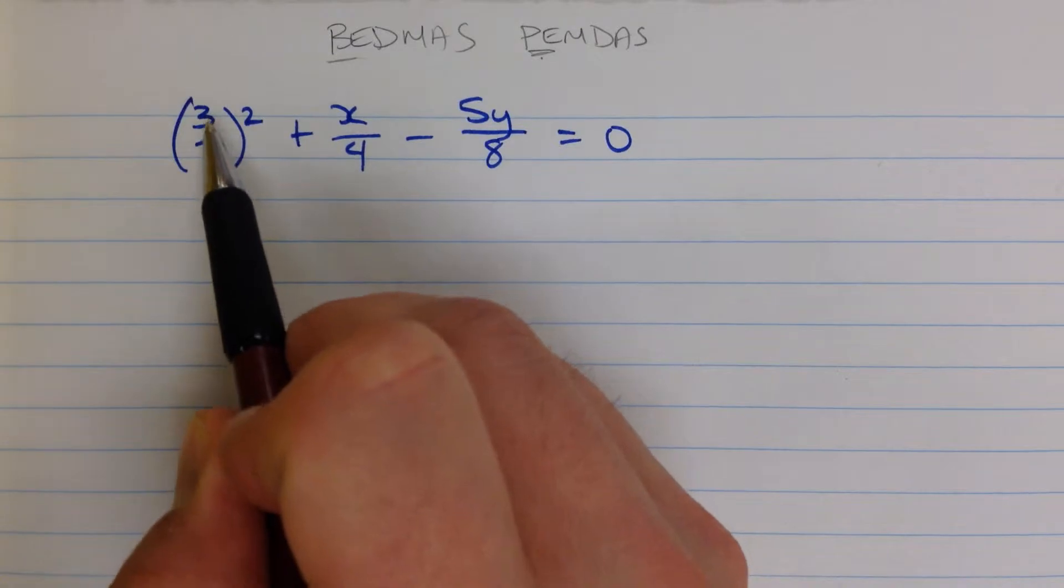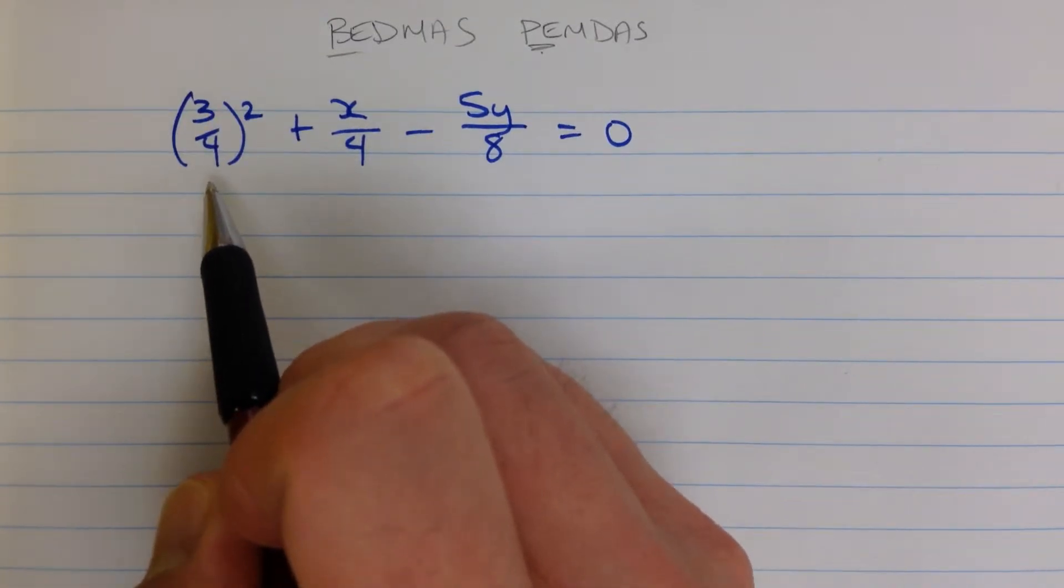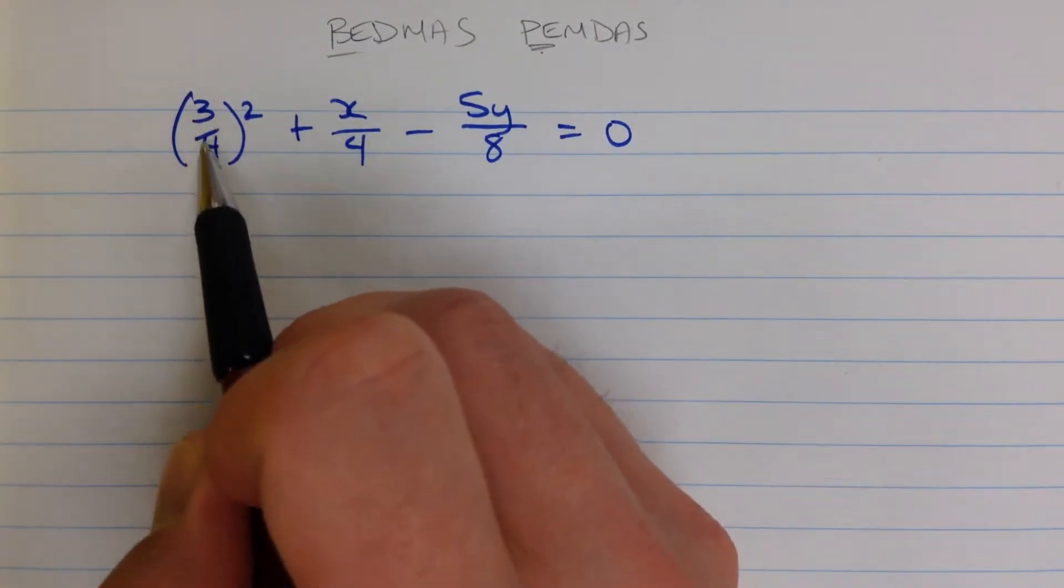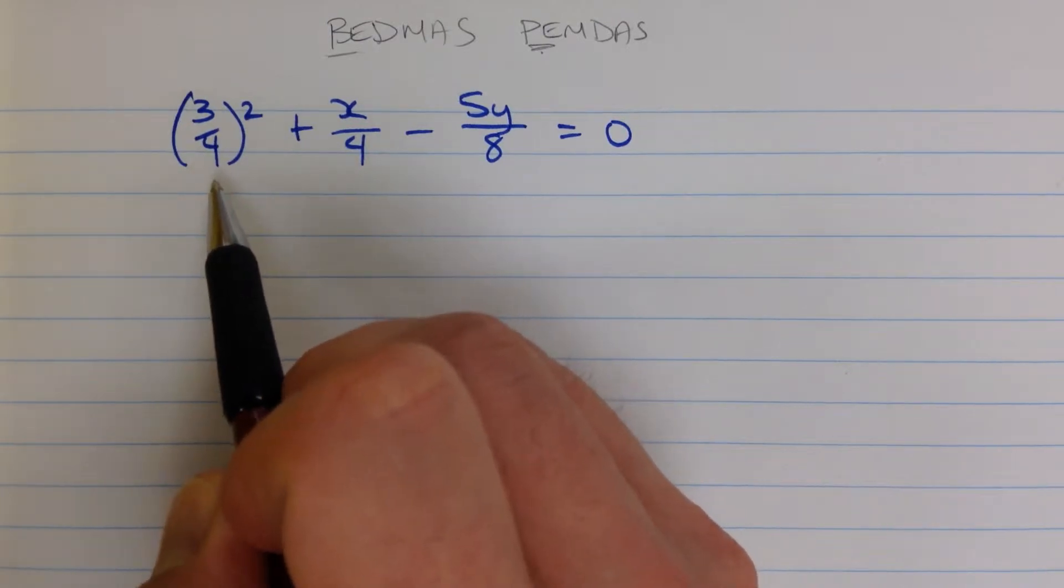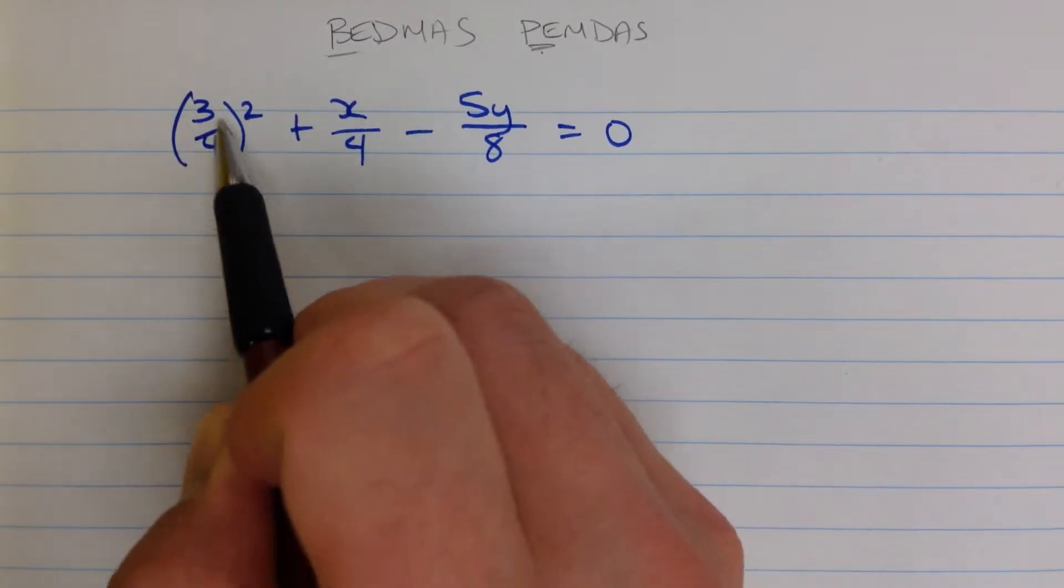Here we have some brackets, but inside of those brackets we just have a value. This is not a longer expression with operations in it, it's just a single number. So this is actually complete.